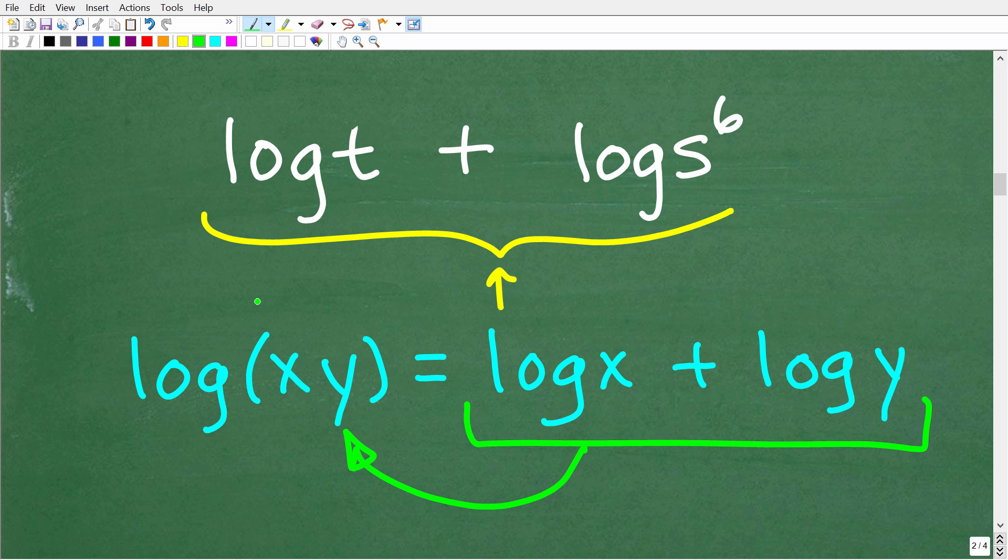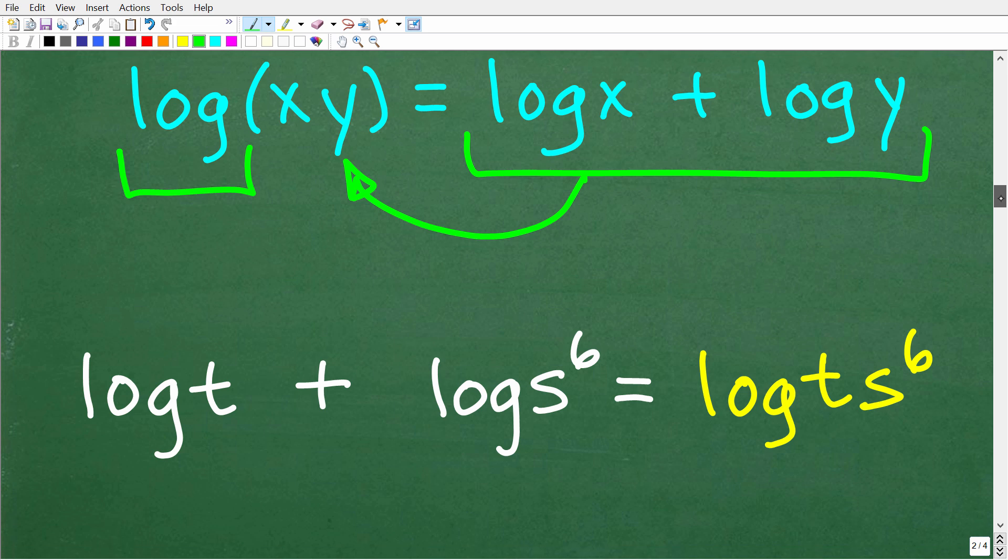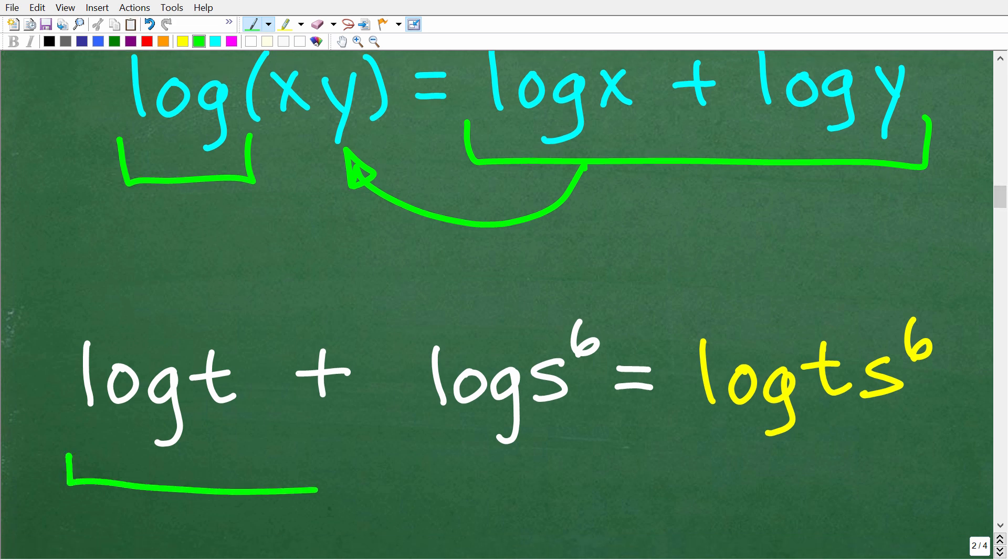So that means that here we can write this expression as one single logarithm. It's going to be a logarithm times these things right here. Okay, so that would be t times s to the 6 power. So log t plus log s to the 6 power is equal to log t times s to the 6 power. So that is going to be our final move in order to condense this expression. So our final answer is log t times s to the 6 power.